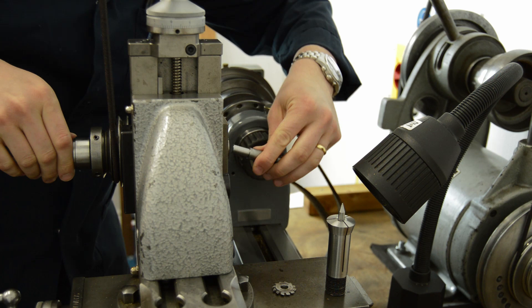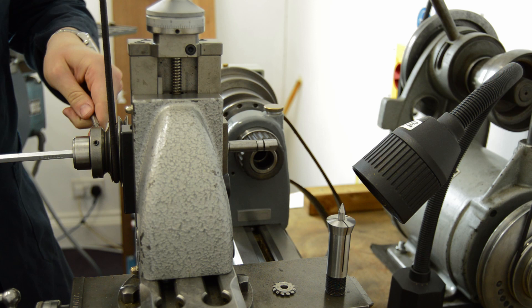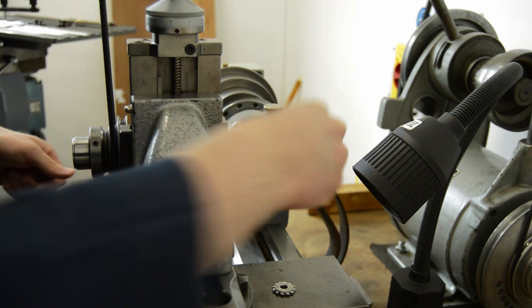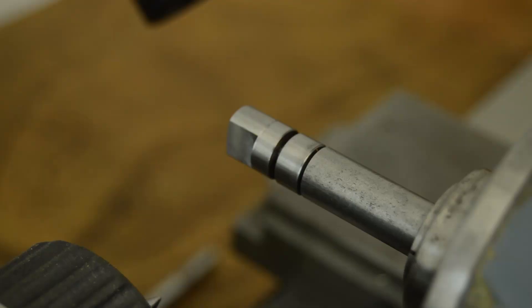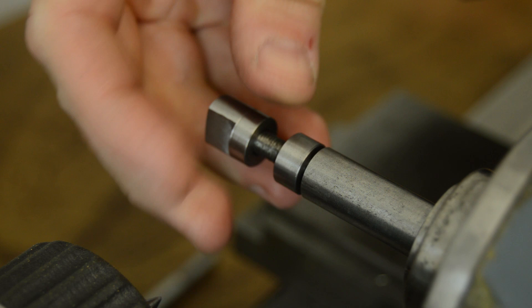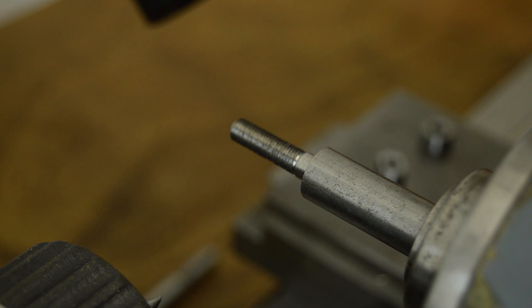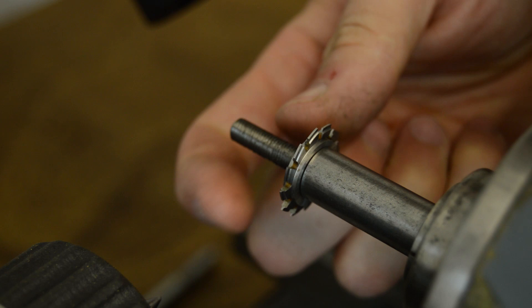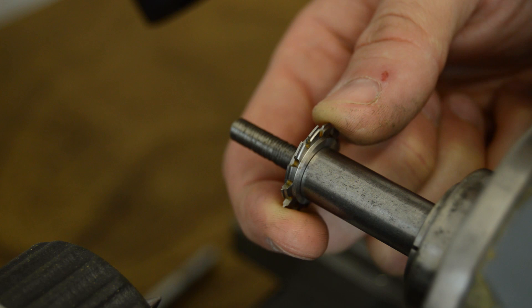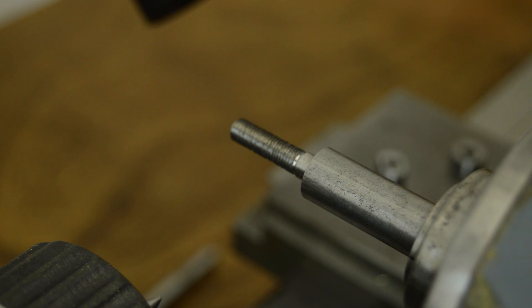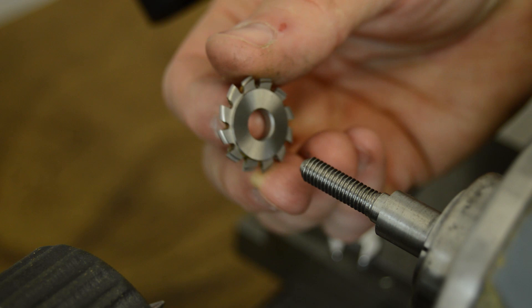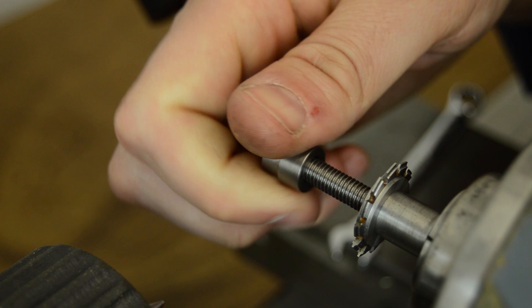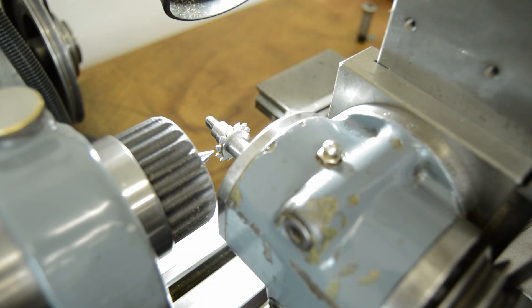Okay so now I'm going to set up the Schaublin 102. This is a longer arbor that I've been using for another job, we've put in the shorter arbor as we can get away with that way, it gives the best rigidity possible. So having put the right holder in this time, I can now put the cutter onto the holder and we can begin centering it.